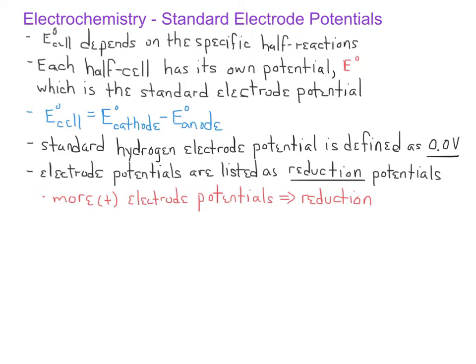The electrode in any half-cell with a lower tendency to undergo reduction — or, in other words, with a greater tendency to undergo oxidation — is negatively charged relative to the standard hydrogen electrode and therefore has a negative standard electrode potential.